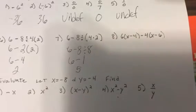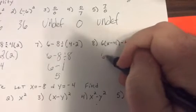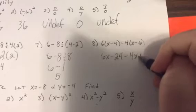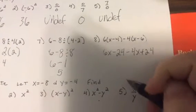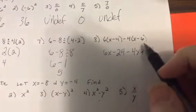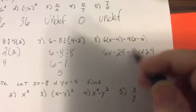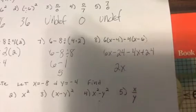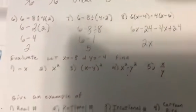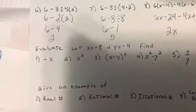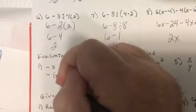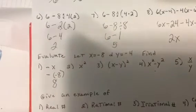Then this is 6x minus 24 minus 4x plus 24. So 6x minus 4x is 2x, and minus 24 plus 24 is zero.